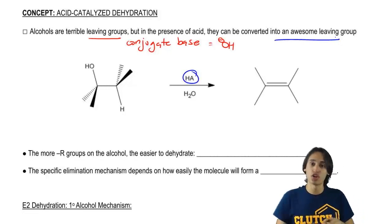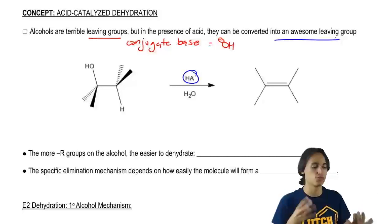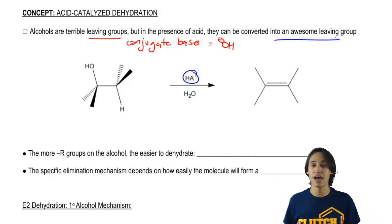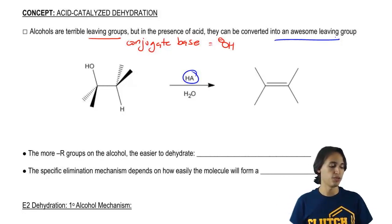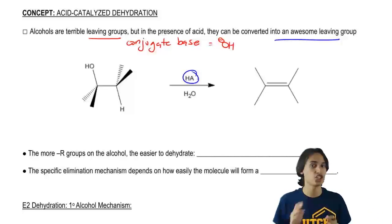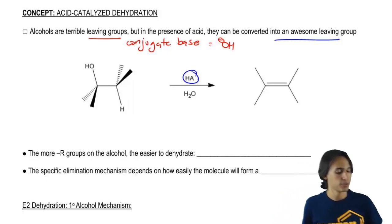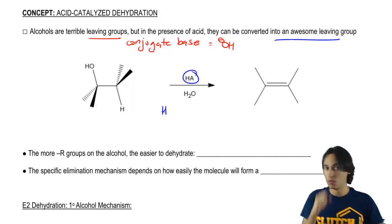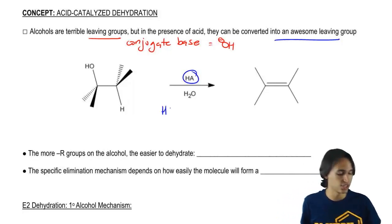So here's the general formula. I'm not going to show you the mechanism just yet. Basically what we have is some kind of alcohol and some kind of acid over water. Now in this case, I just put the general HA to mean really any acid, but your common acids are going to be any of the strong acids.